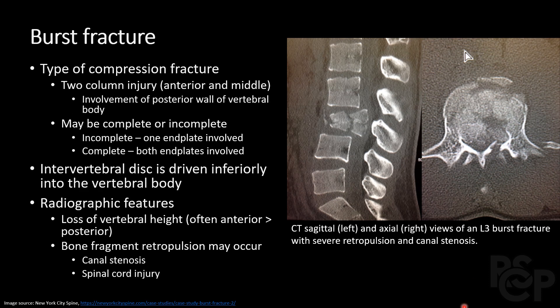Burst fractures are also a type of compression fracture. These involve the entirety of the vertebral body — both the anterior and middle columns, which includes the posterior wall. They may be incomplete or complete depending on whether one or both end plates are involved. These fractures result in significant height loss and have a high risk of bony retropulsion with possible resultant canal stenosis or cord injury. You can see it extending posteriorly into the canal space.